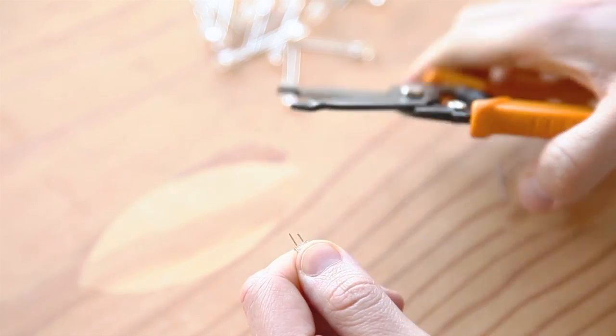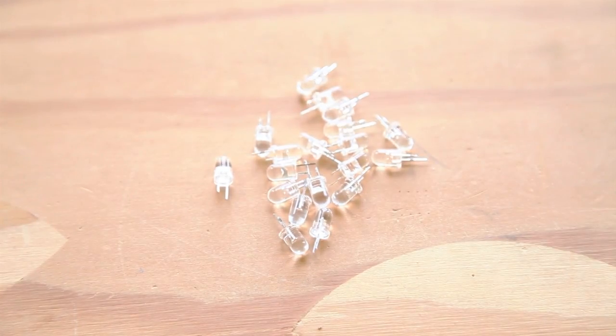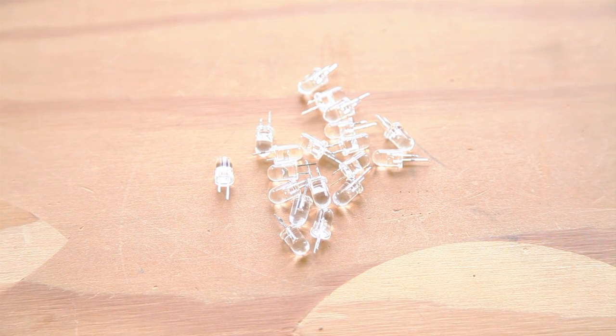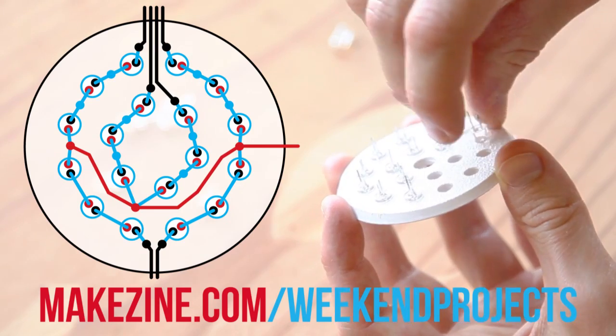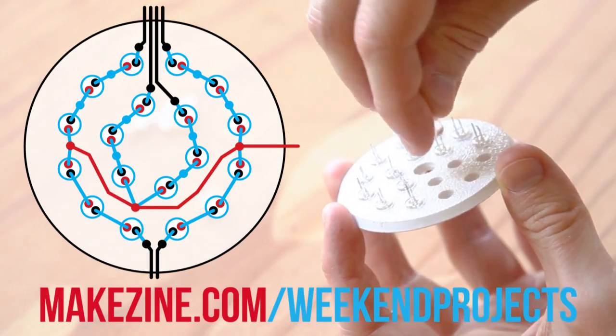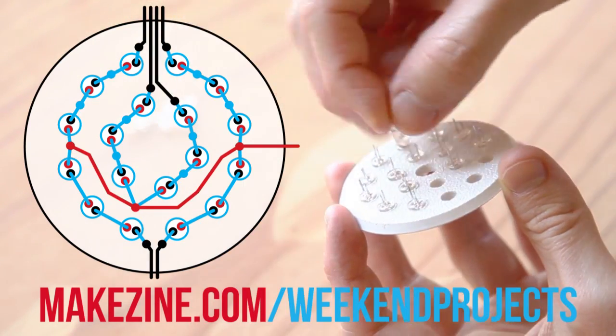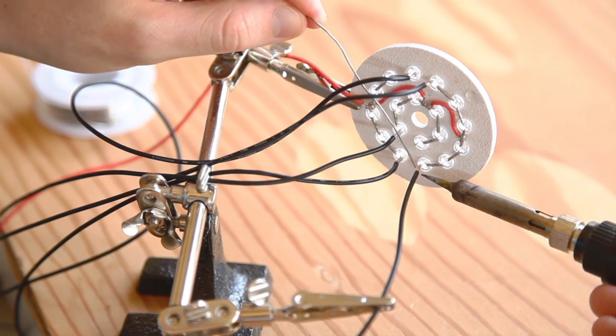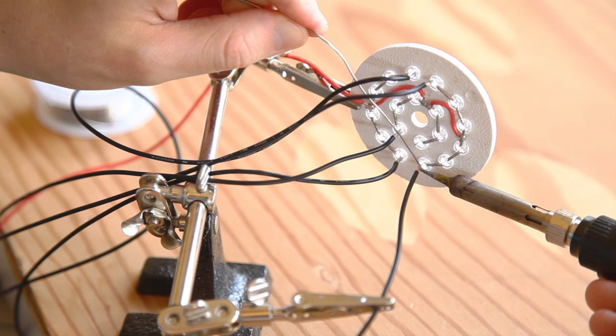Next, trim the LED leads, making the long leads roughly a half inch and the shorter ones a quarter inch, so you can still tell them apart. Referring to the LED wiring diagram on the project page, push fit an LED into each hole, being careful to get the polarity right. Solder the LED leads together and add wires per the diagram.